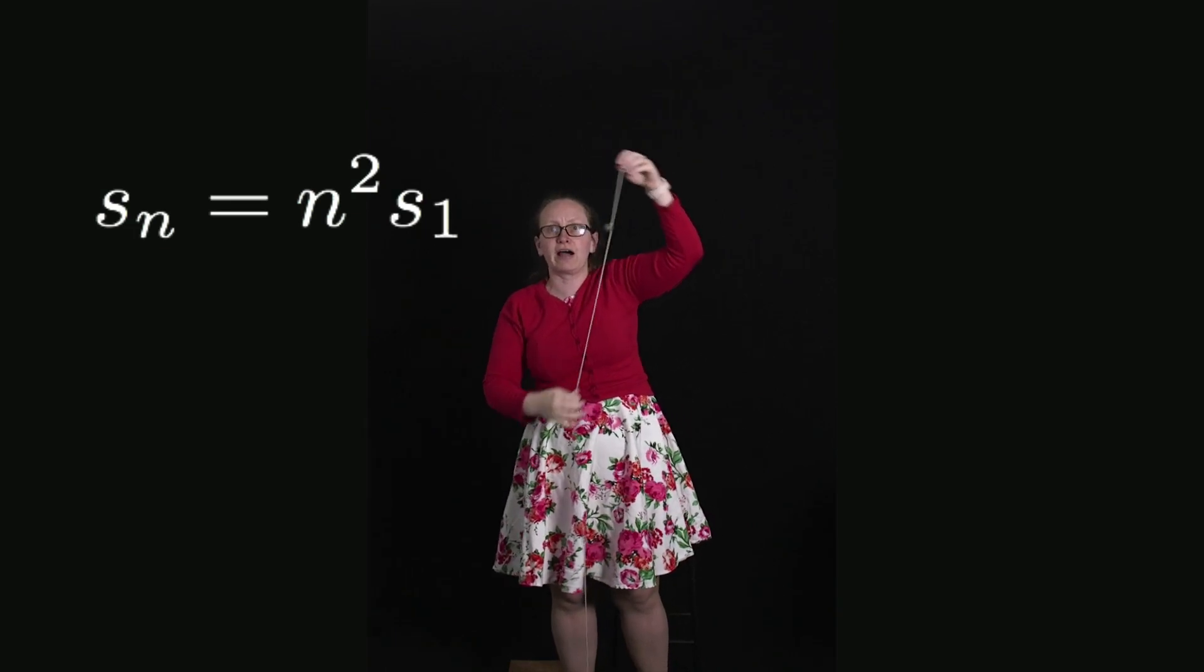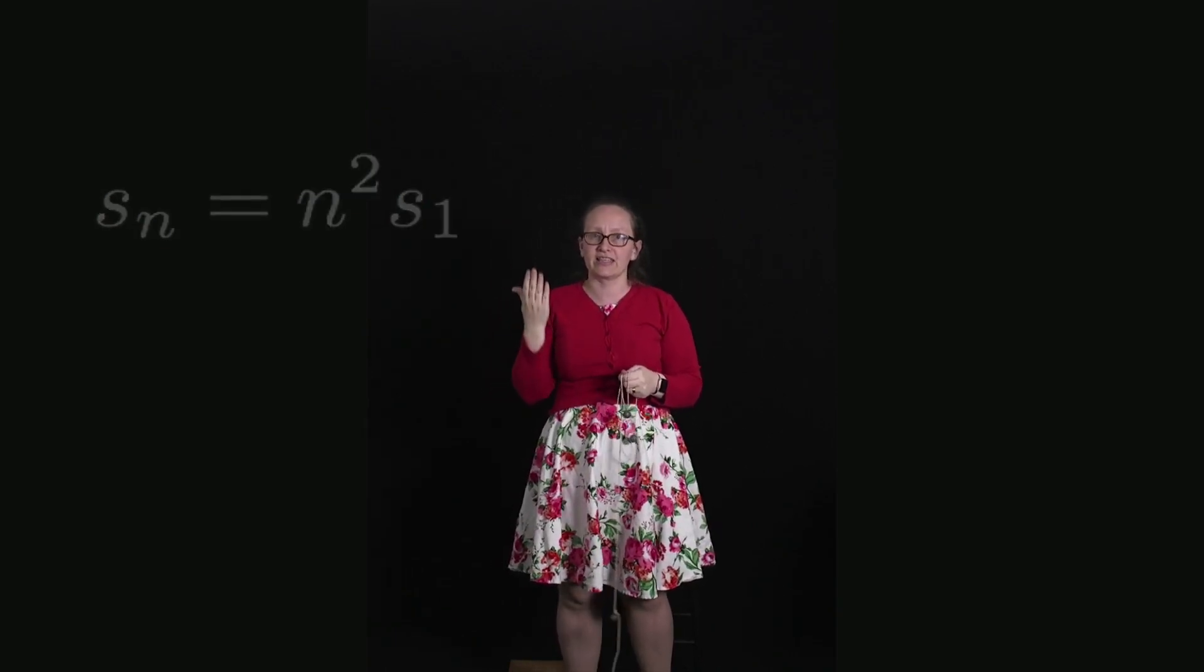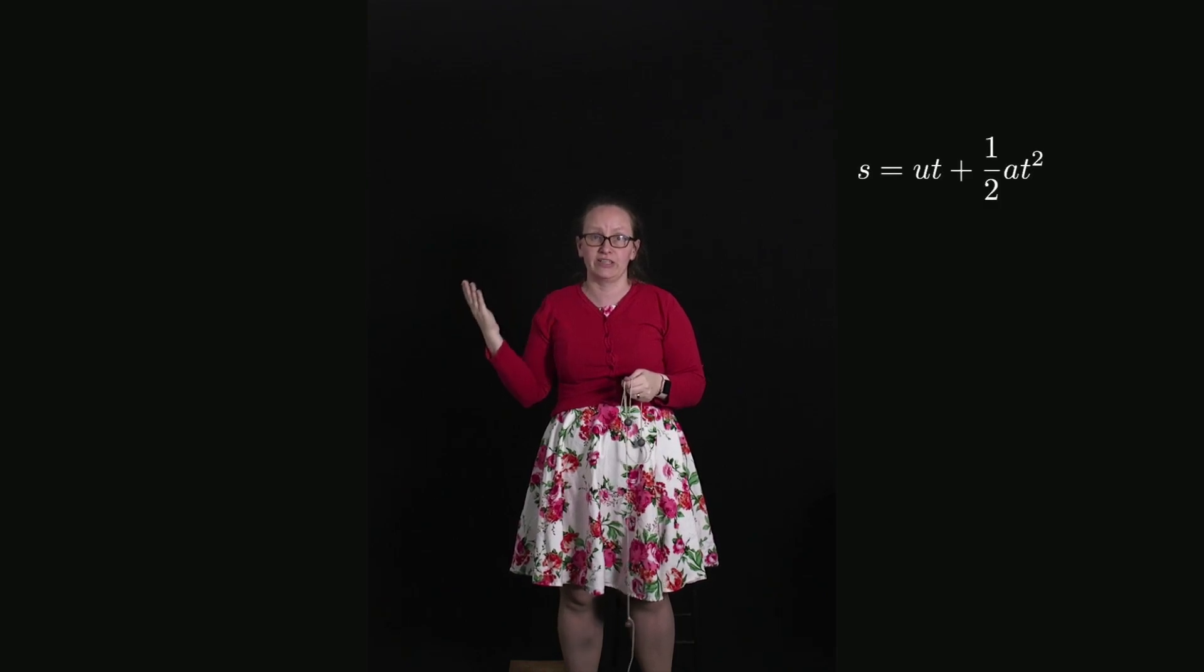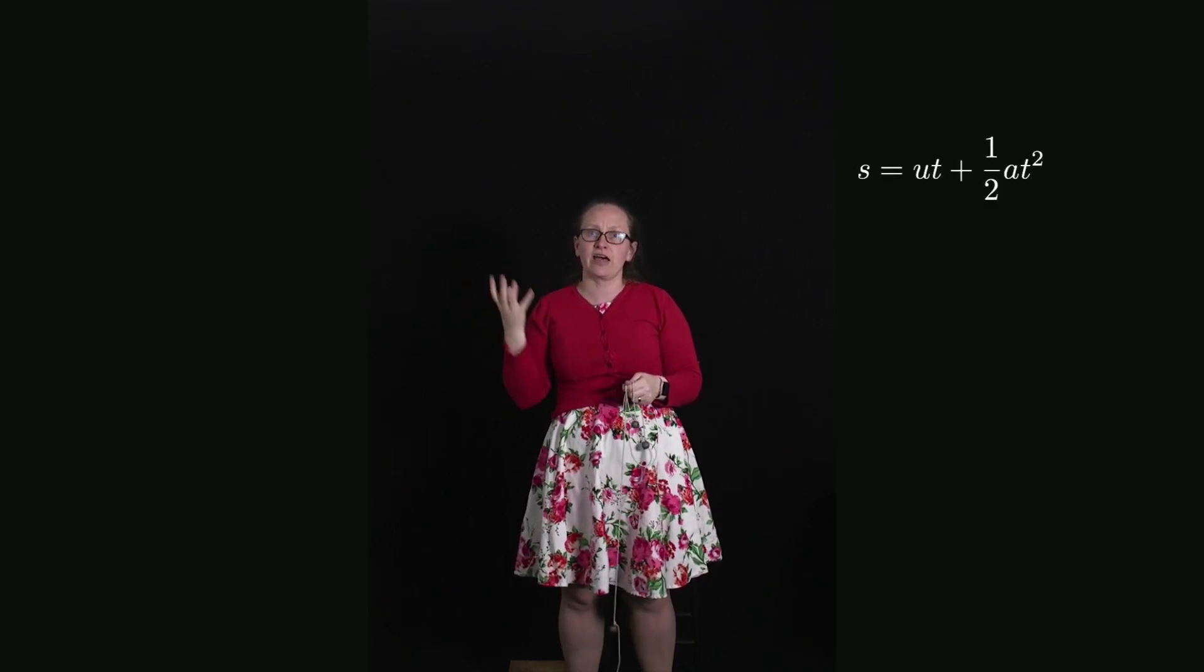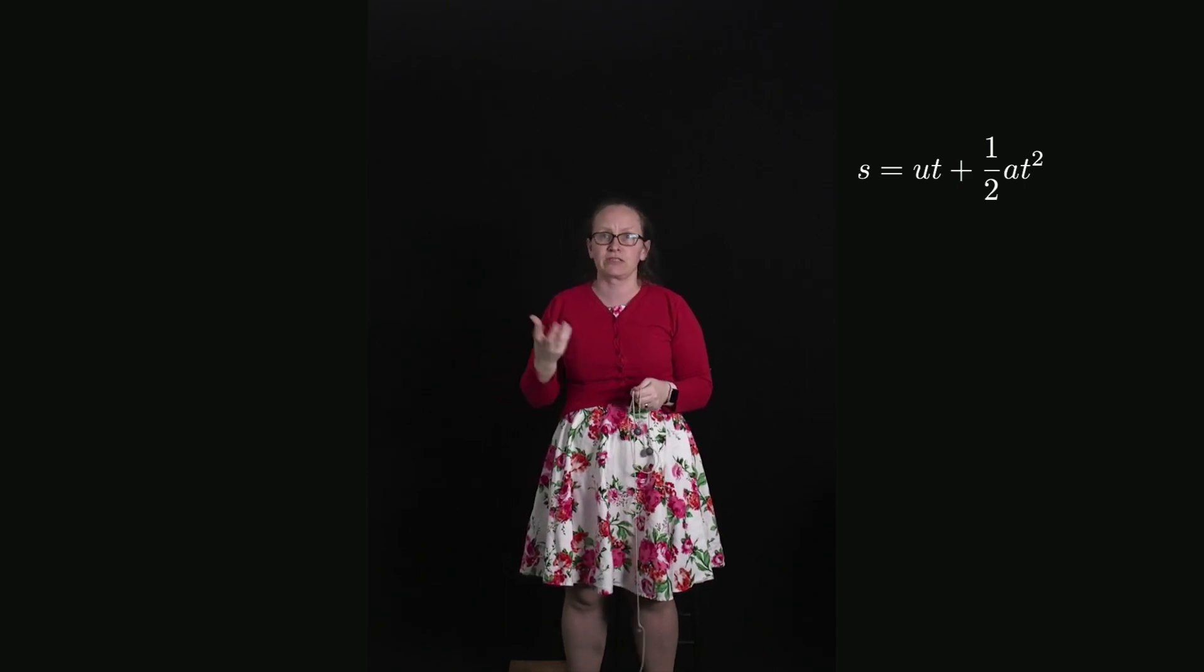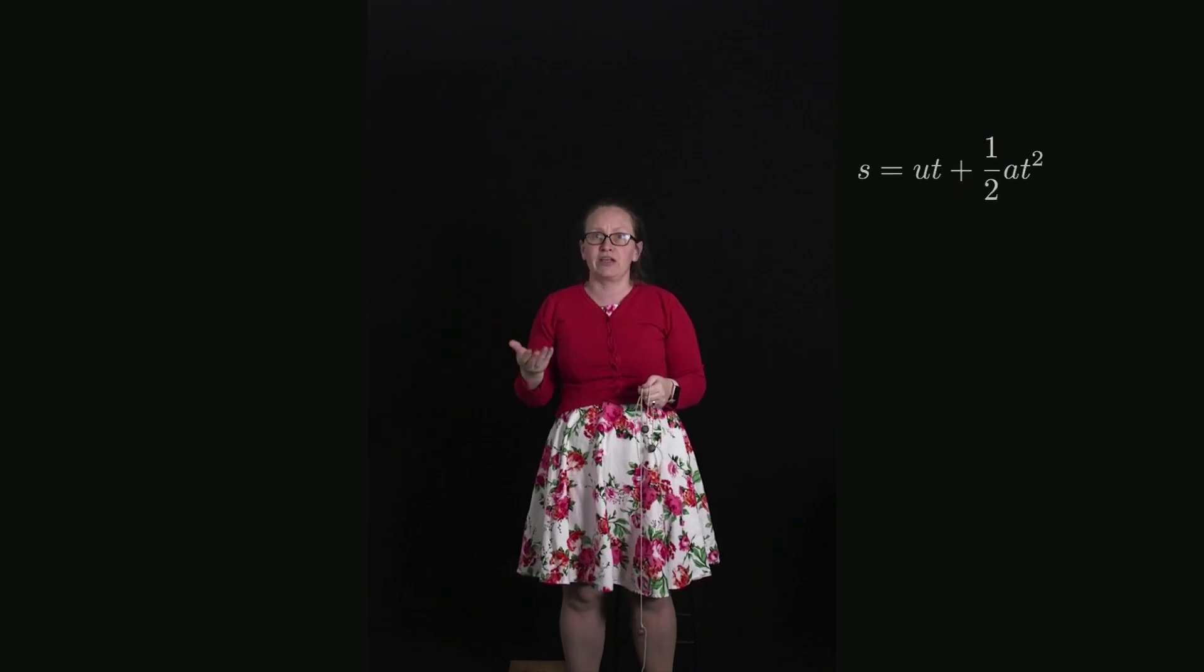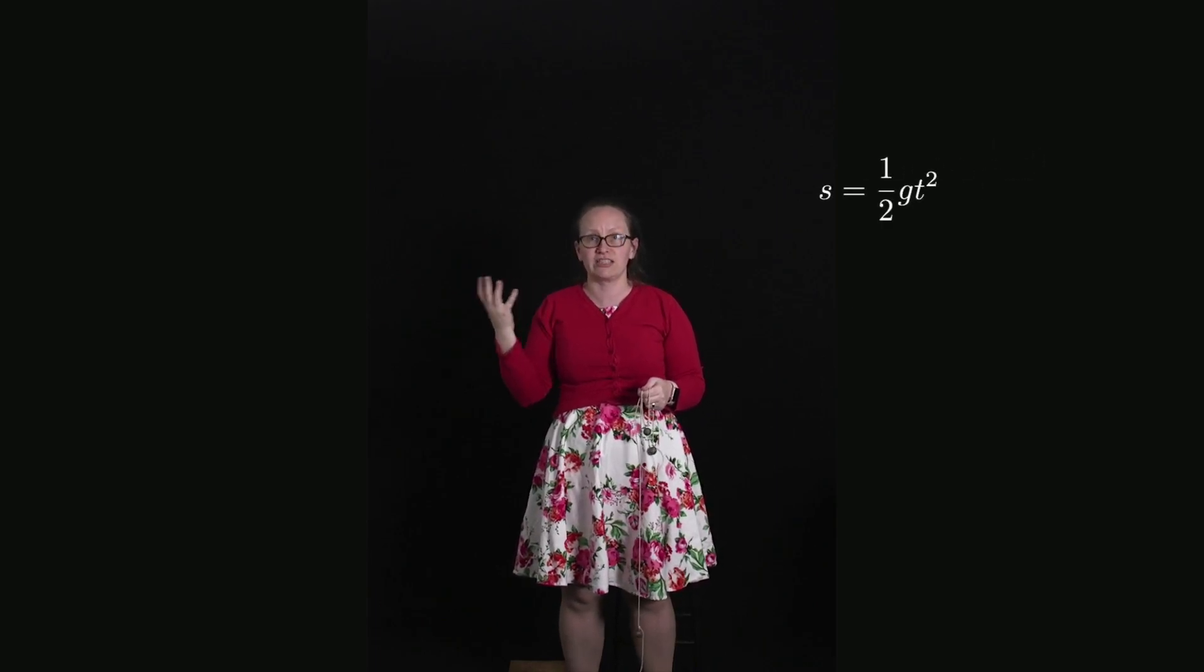How we can derive this relationship is with our kinematic equation s = ut + 1/2 at². In this case I was dropping it from rest so u = 0, and the acceleration was given by g, the acceleration due to gravity. So we have the equation s = 1/2 gt².